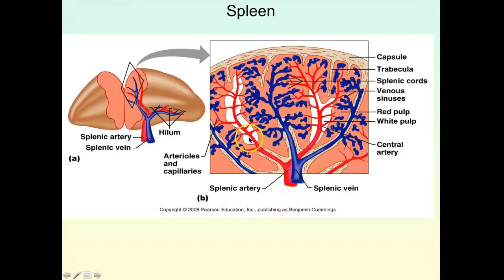The spleen screens blood, whereas lymph nodes screen lymph. An artery comes in bringing blood, and you see the sleeve of white around that artery — that's called white pulp. White pulp is a sleeve of white blood cells surrounding the artery, so when it branches into capillaries, the white cells can detect anything coming out of the bloodstream. The red pulp is the bulk of the spleen — it's where red blood cells are broken down. The white pulp is a sleeve of lymphatic tissue for immune screening; the red pulp has venous sinuses with macrophages that take up and destroy old red blood cells.